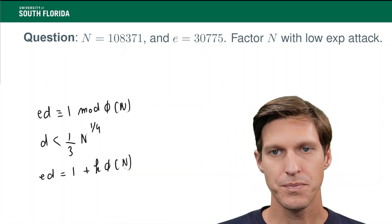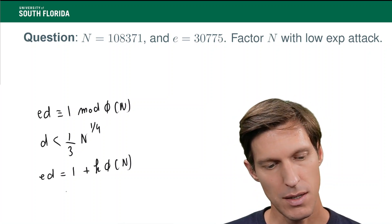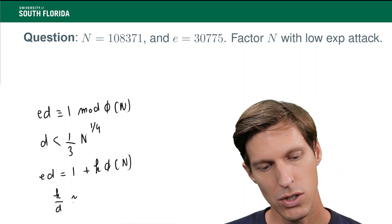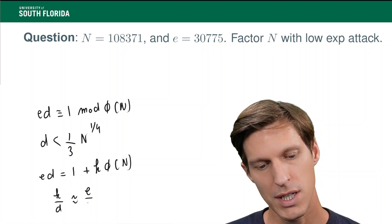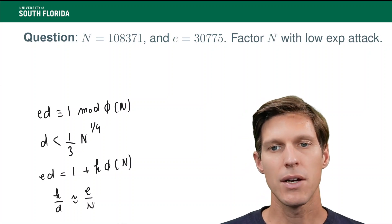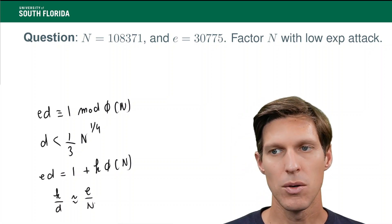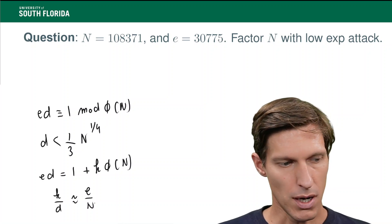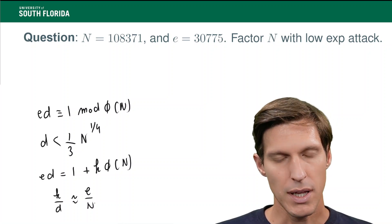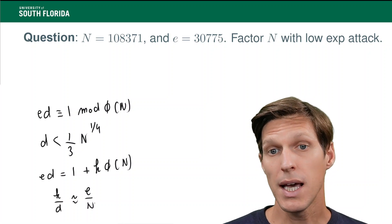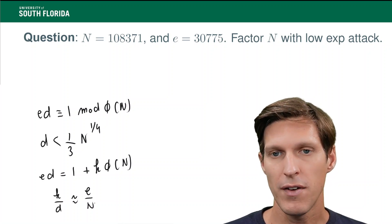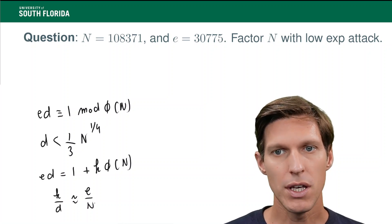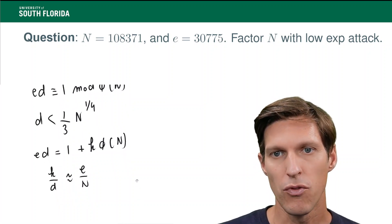What happens here is that the fraction k over d will be somewhat close to the fraction e over n. That can be calculated, of course, because e and n are both public parameters. It means that k over d is so close that it will be one of the convergence of the continued fraction expansion of e over n, which is something that we can perform.